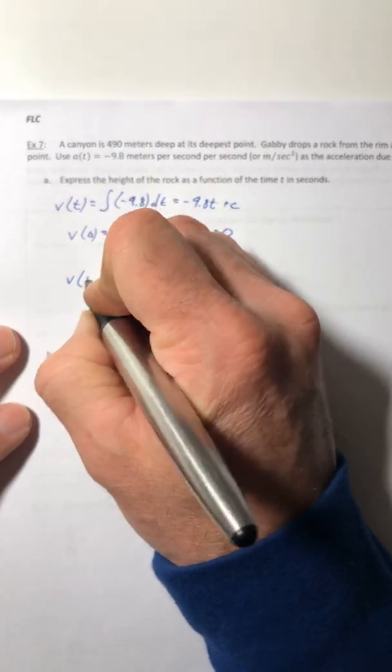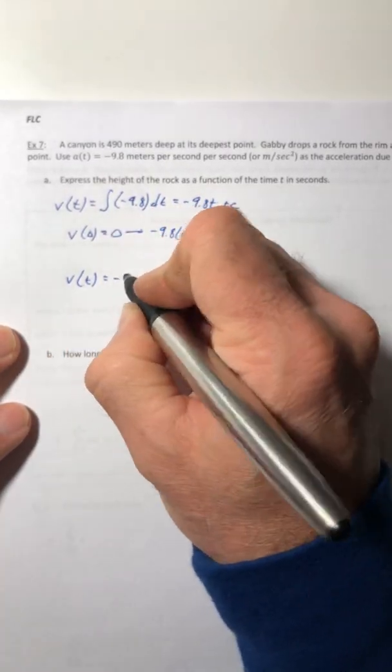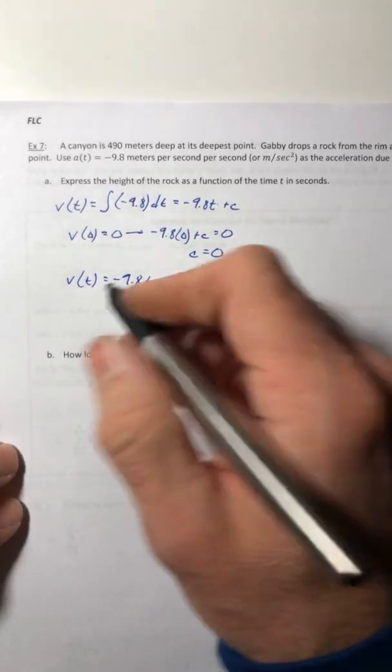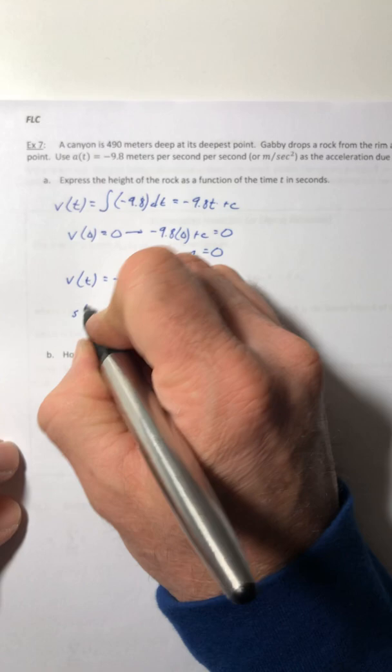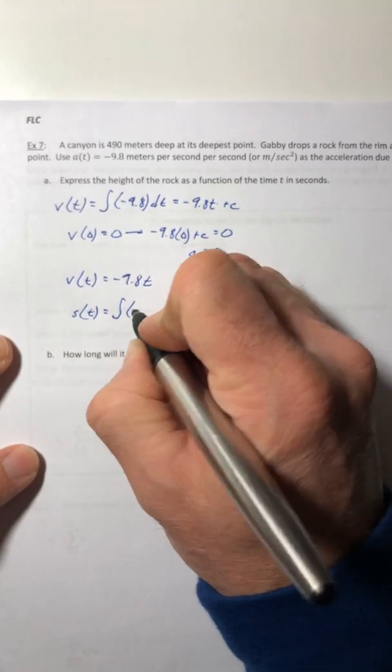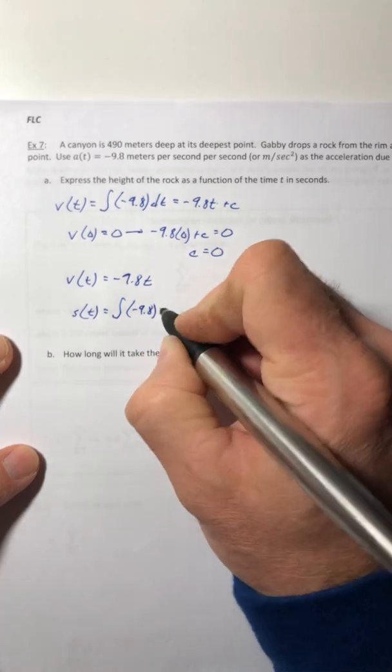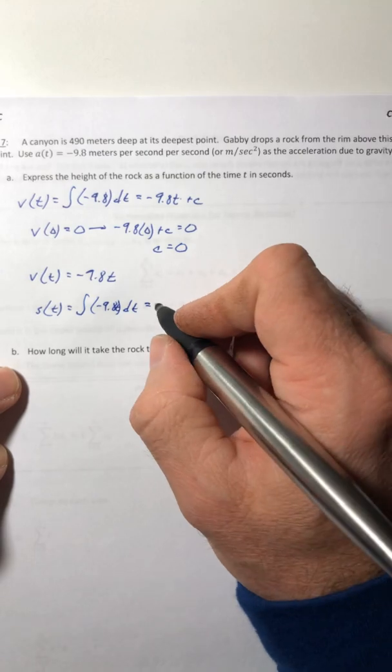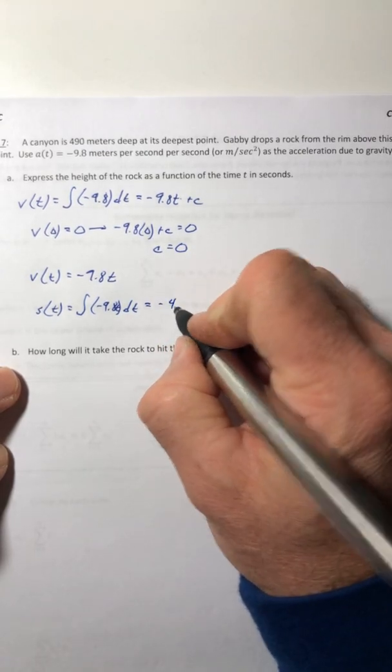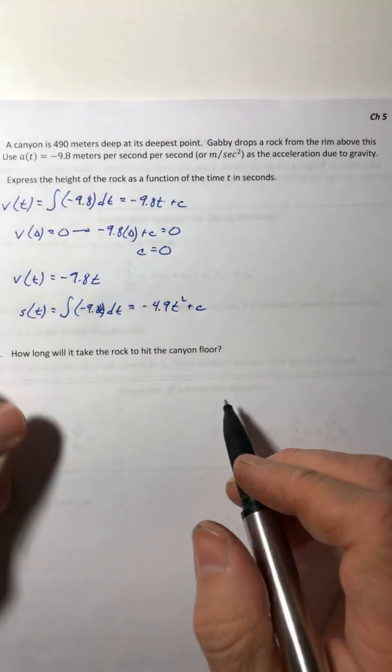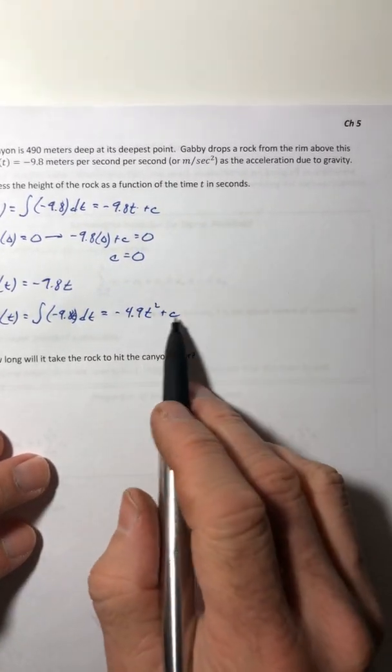So your velocity function is just that negative 9.8 T. Okay, so now let's integrate that to get to position. So if you integrate this, negative 4.9 T squared plus C. Okay, so we got to figure out the C.